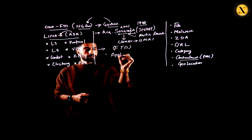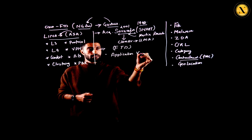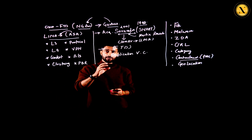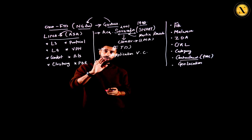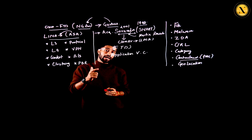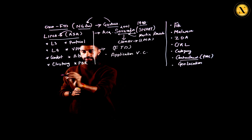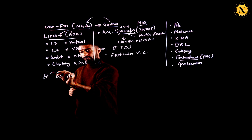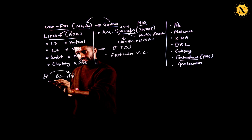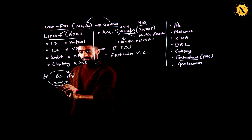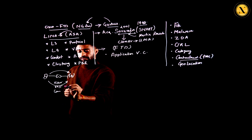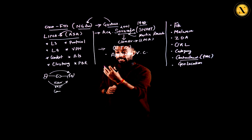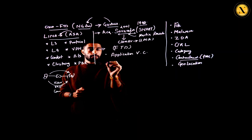FTDs are also capable of Application Visibility Control, or AVC. This allows you to detect and block specific applications. You can be very granular — for example, Facebook may be allowed, but within Facebook, video calling, VoIP, and comments can be individually blocked. That level of control over applications is what AVC provides in FTD.